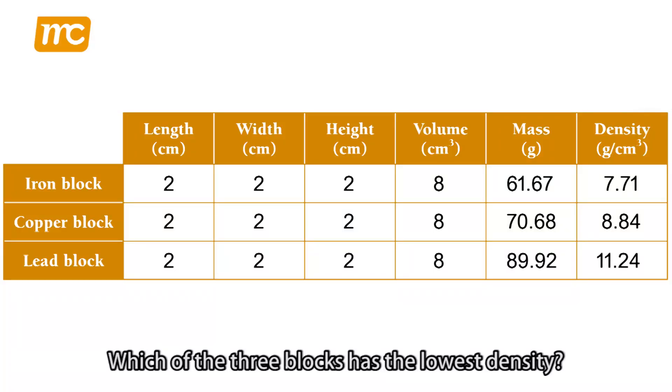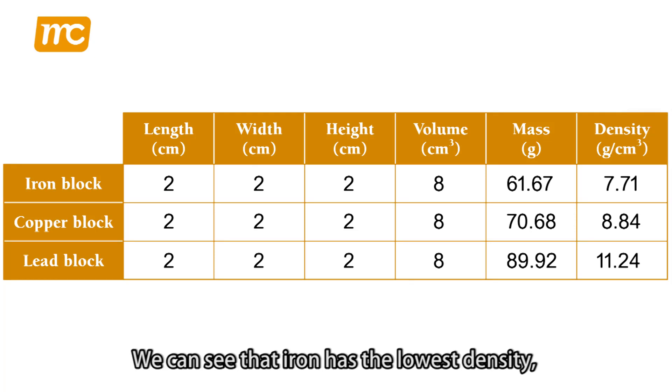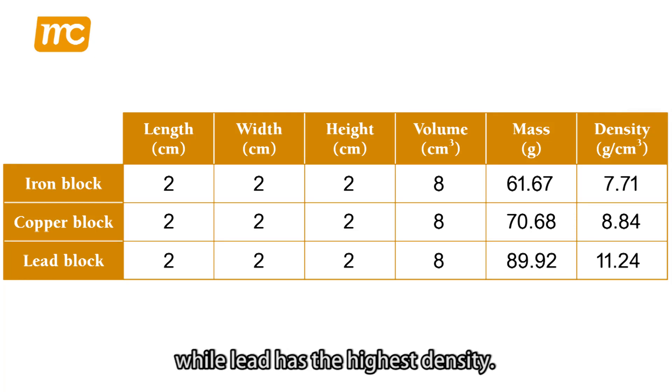Which of the three blocks has the lowest density? Which of them has the highest density? We can see that iron has the lowest density, while lead has the highest density.